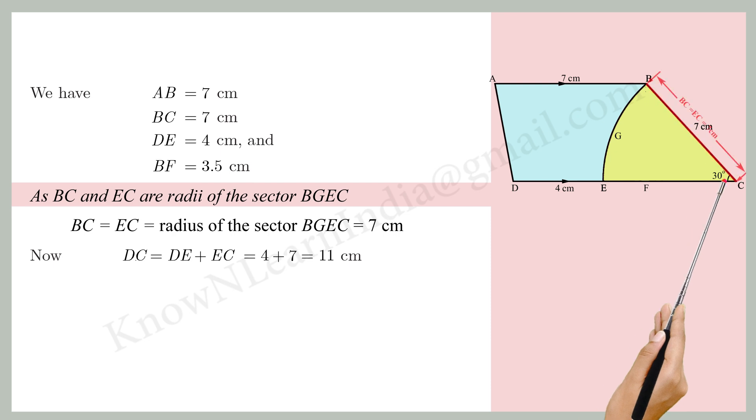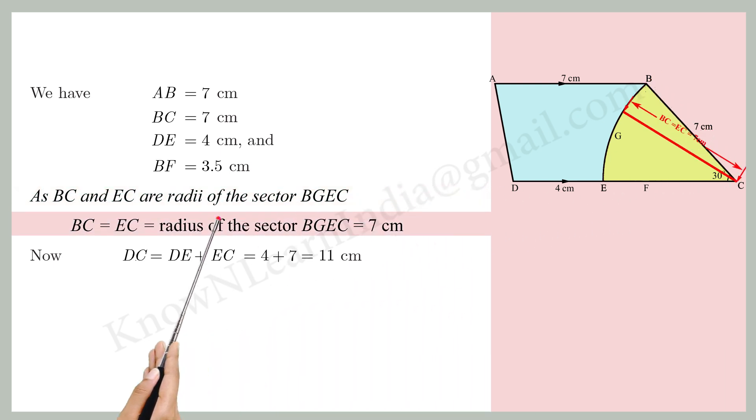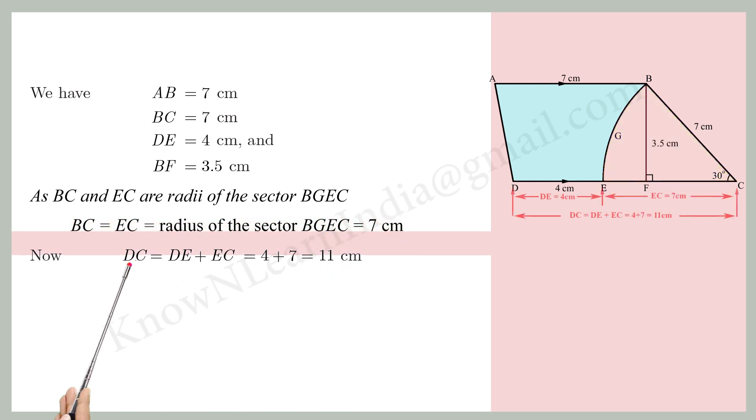As BC and EC are the radii of sector BGEC, BC equals EC equals radius of sector BGEC equals 7 cm. Now, DC equals DE plus EC equals 4 plus 7 equals 11 cm.